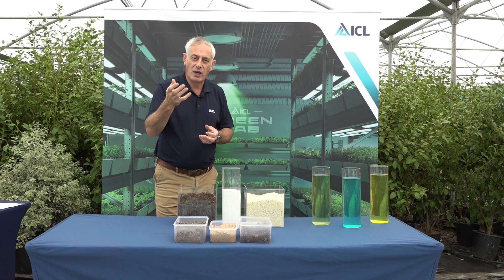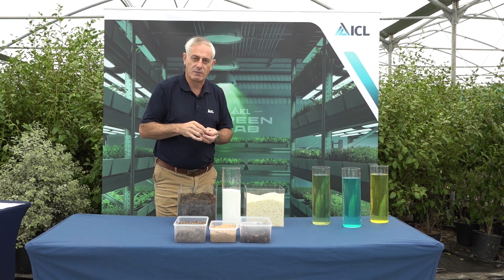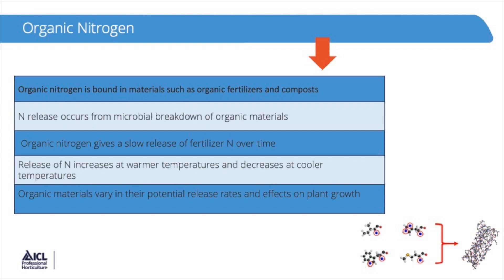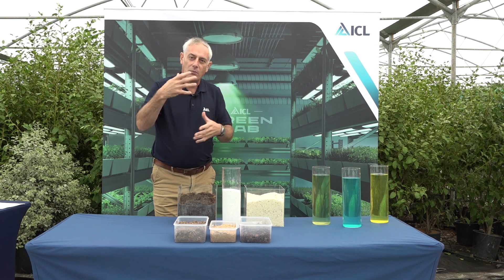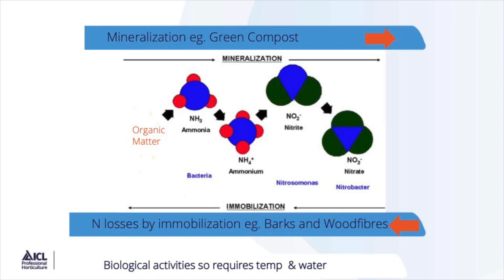Urea can be used in foliar feeds and is taken up quite well into the leaf of the plant. The last form of nitrogen is organic nitrogen, where nitrogen has been built up into long-chain molecules of amino acids, typically into proteins. These need to break down by degradation from bacteria and fungi to be released into the growing media for plants to take up.